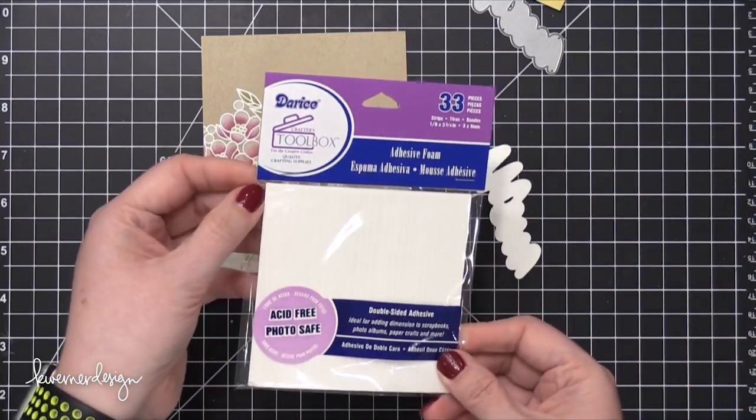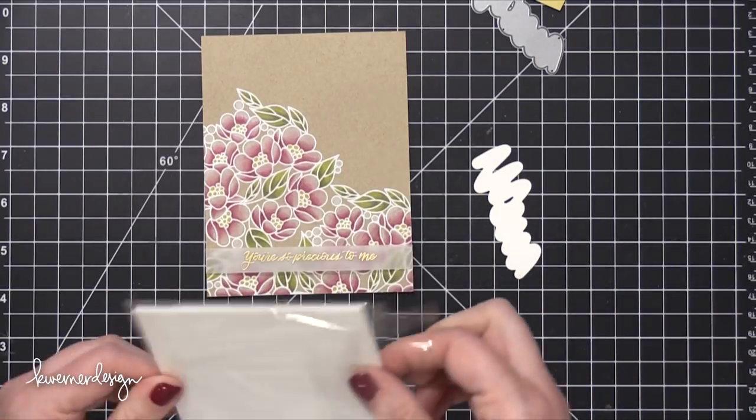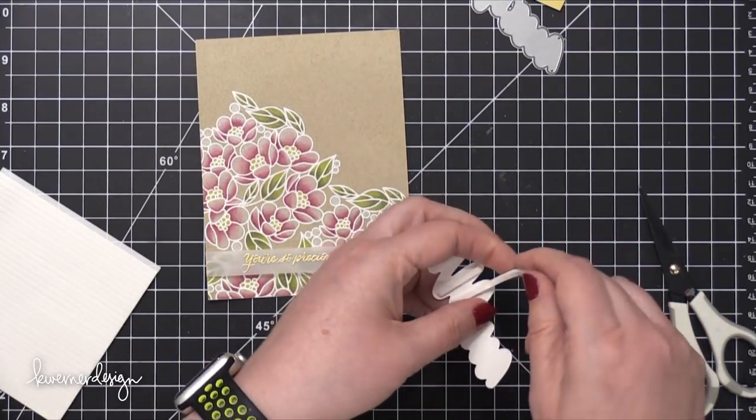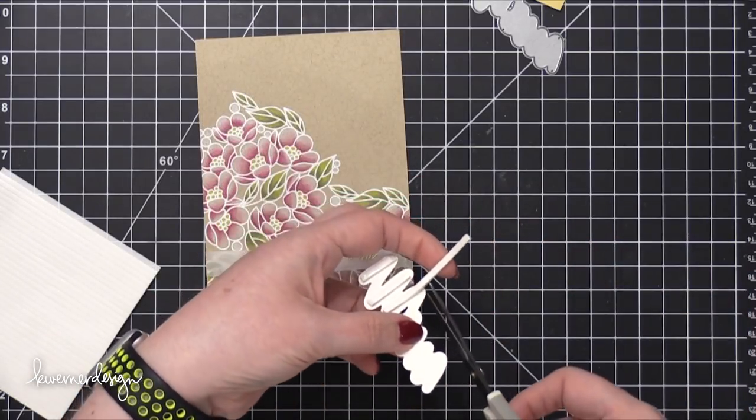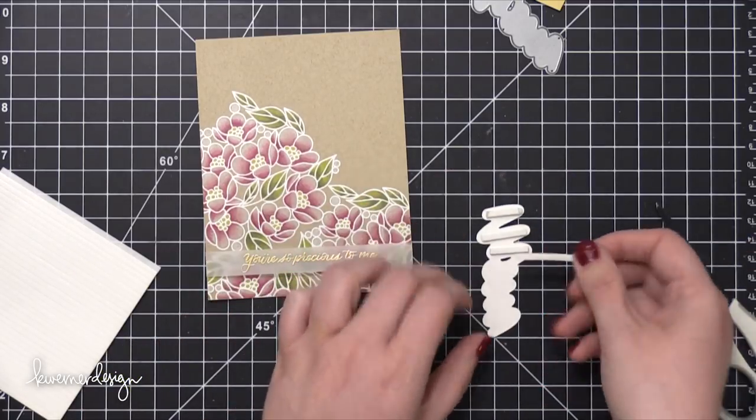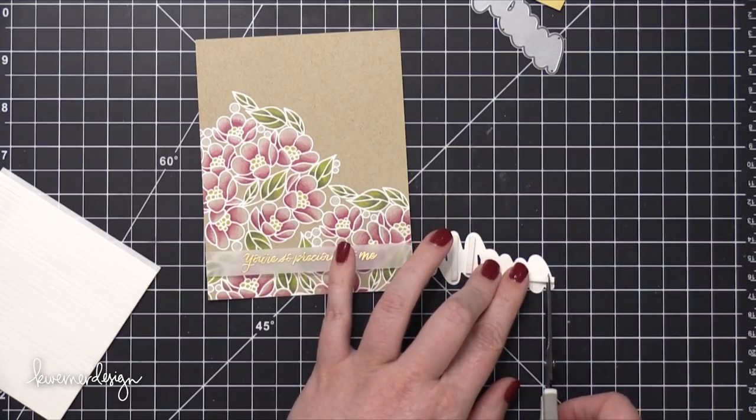I'm using a different foam adhesive today. This is from Darice. These are really narrow strips of foam adhesive. And these were sold out at Simon for a really long time. In fact, I couldn't find them anywhere online. I checked multiple sources online and I couldn't find them. And finally Simon got them back in stock last week. I'm really hoping they are still in stock when this video goes up.